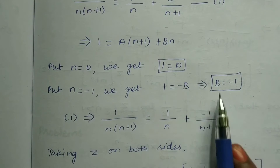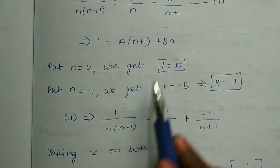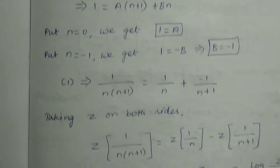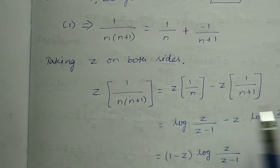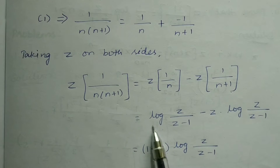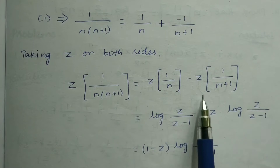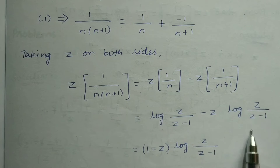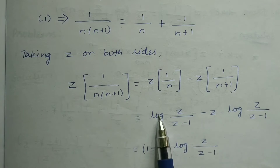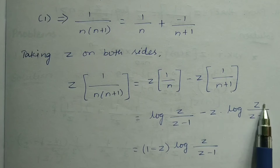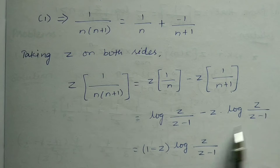So a and b values are found. Substituting back into the equation, we now have two Z-transform terms. We know Z of 1 by n equals log of Z by (Z minus 1). Then Z-transform of 1 by (n+1) equals Z into log of Z by (Z minus 1). Combining the two terms, the log term is common, giving 1 minus Z.